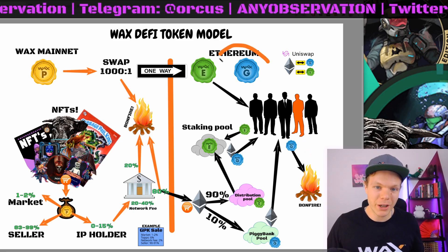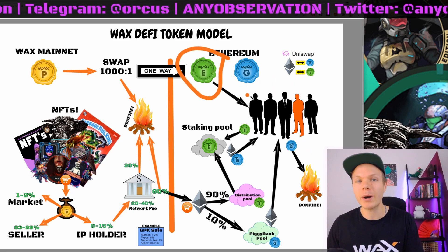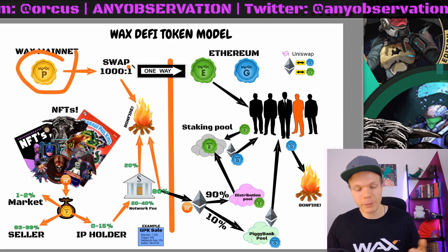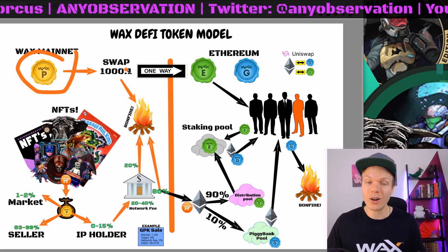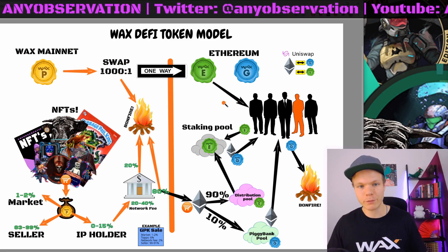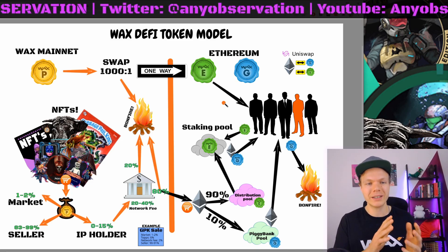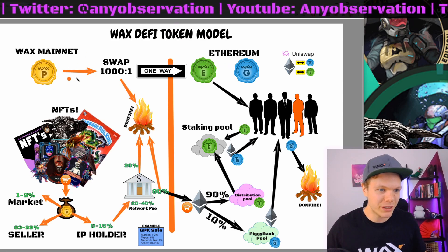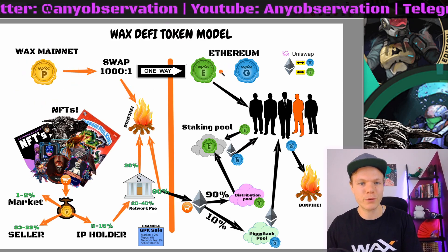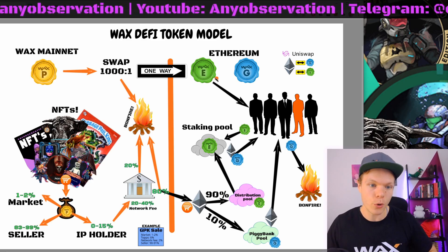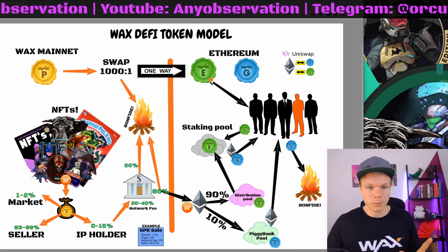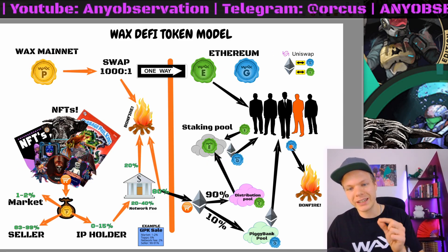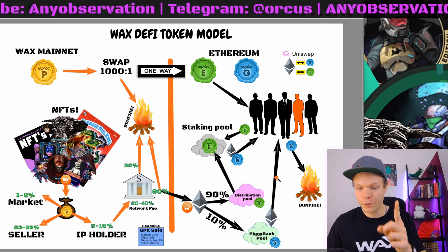The total supply of WAXG is 10 million. The total supply of WAXE is 3.7 billion when all are generated, which means that you can swap all of them for WAXE. There's some inflation on WAX depending on how that goes. So WAXE — you can stake it and you earn Ethereum and WAXG. WAXG can be burnt and you earn Ethereum for that.